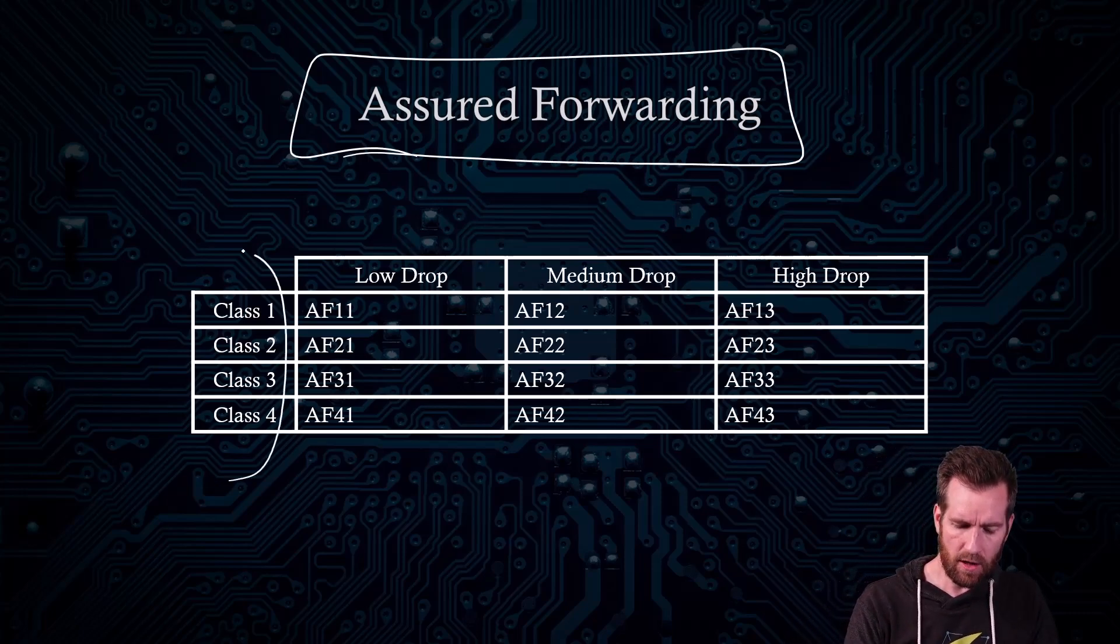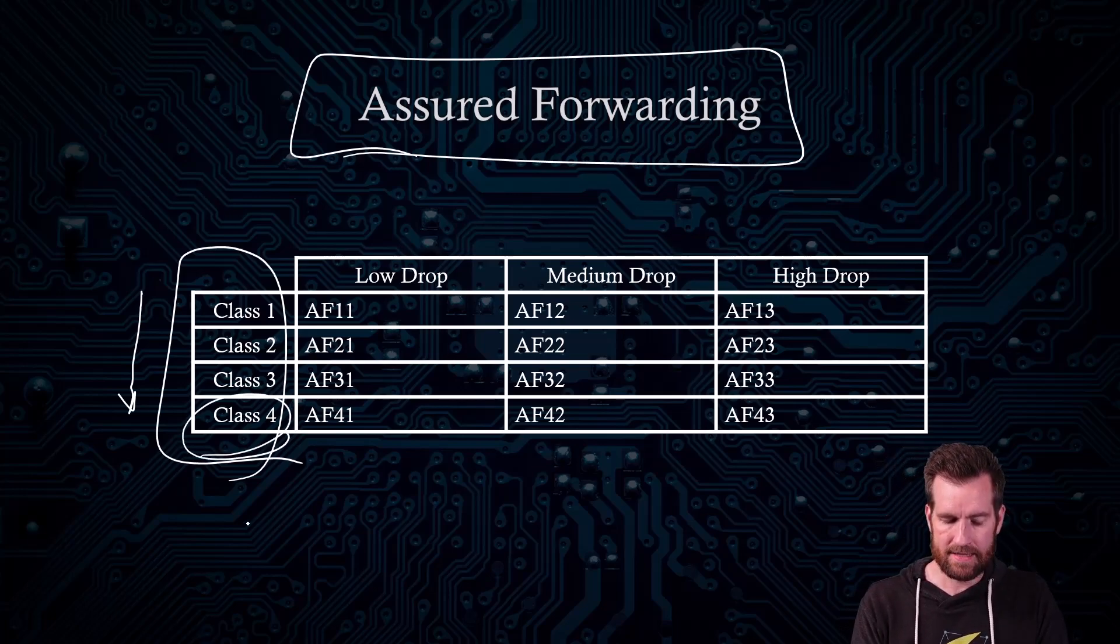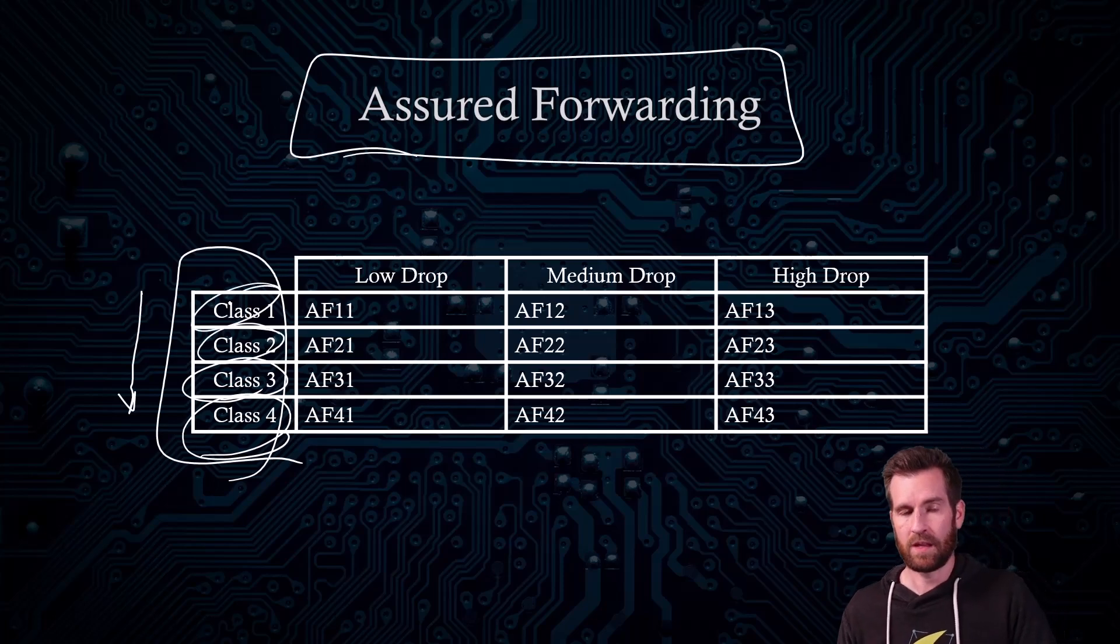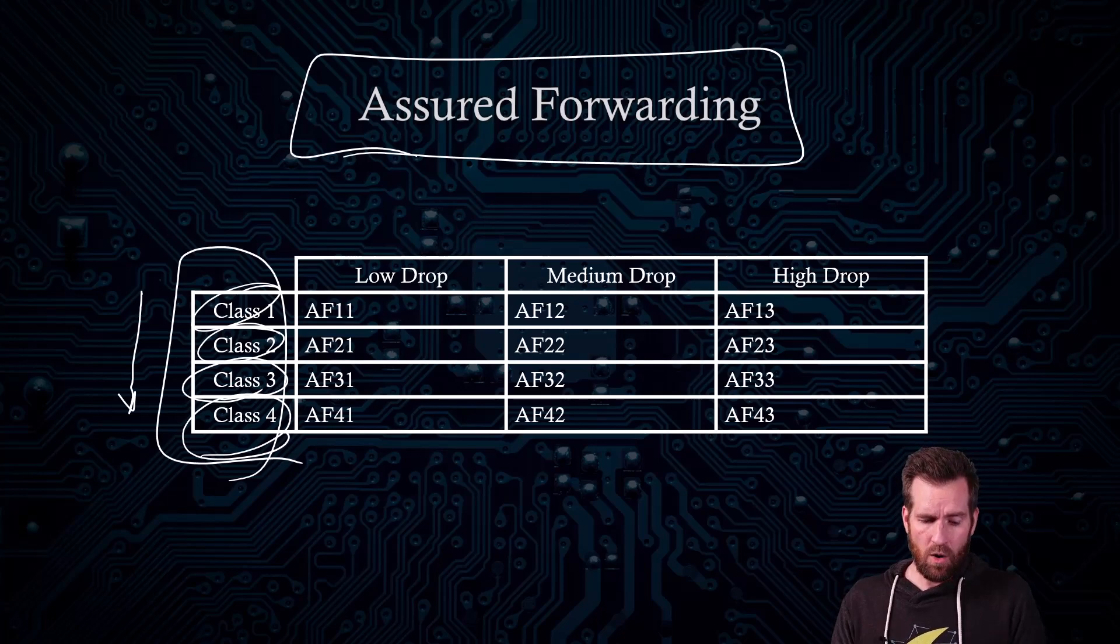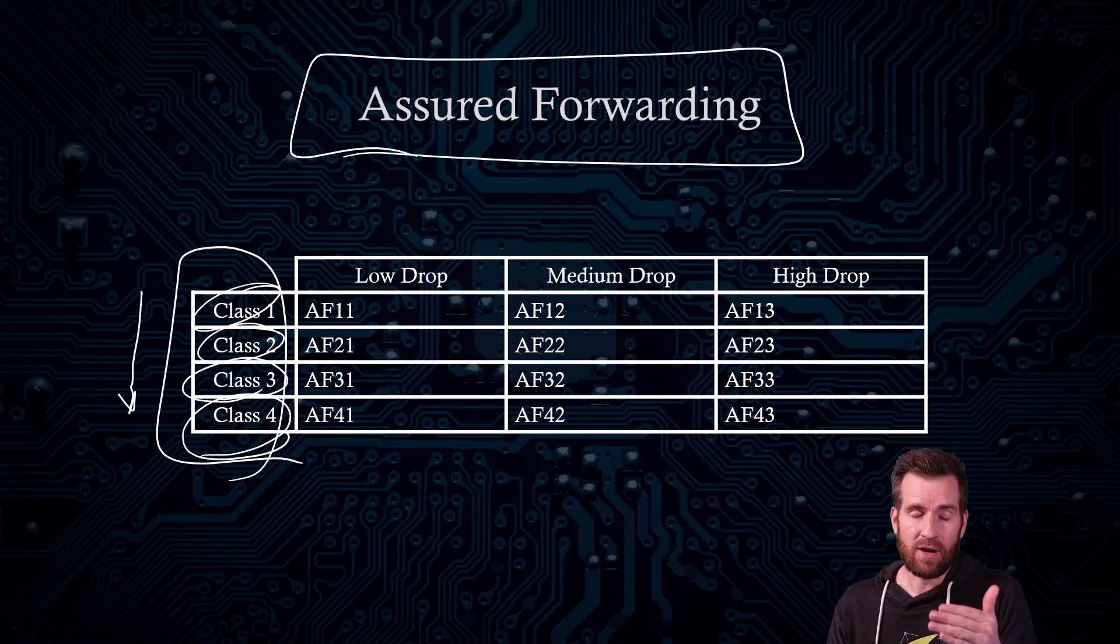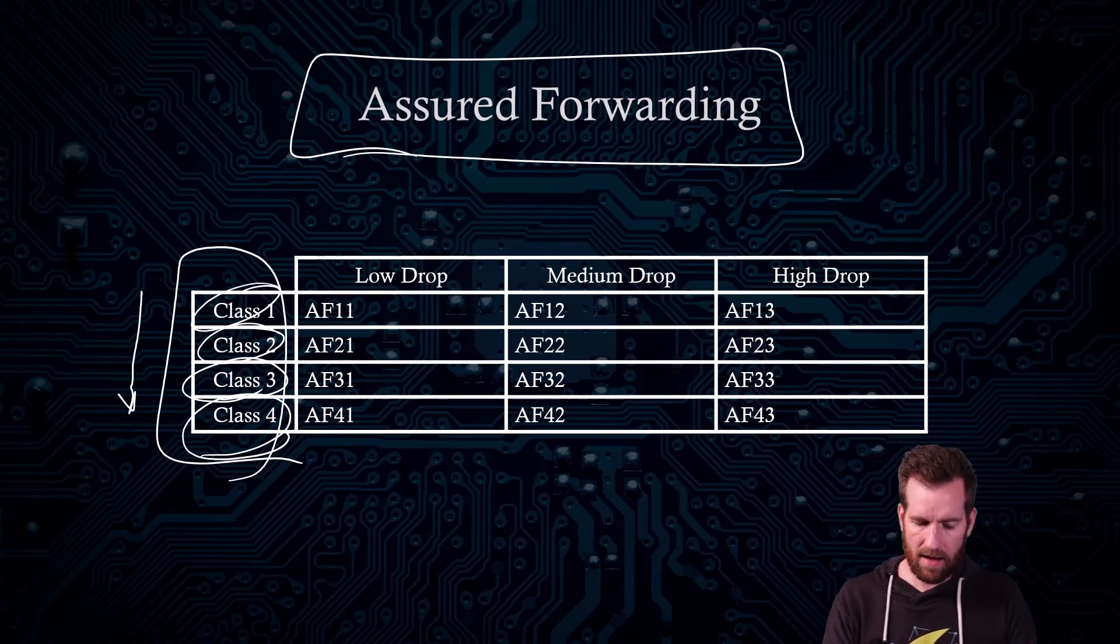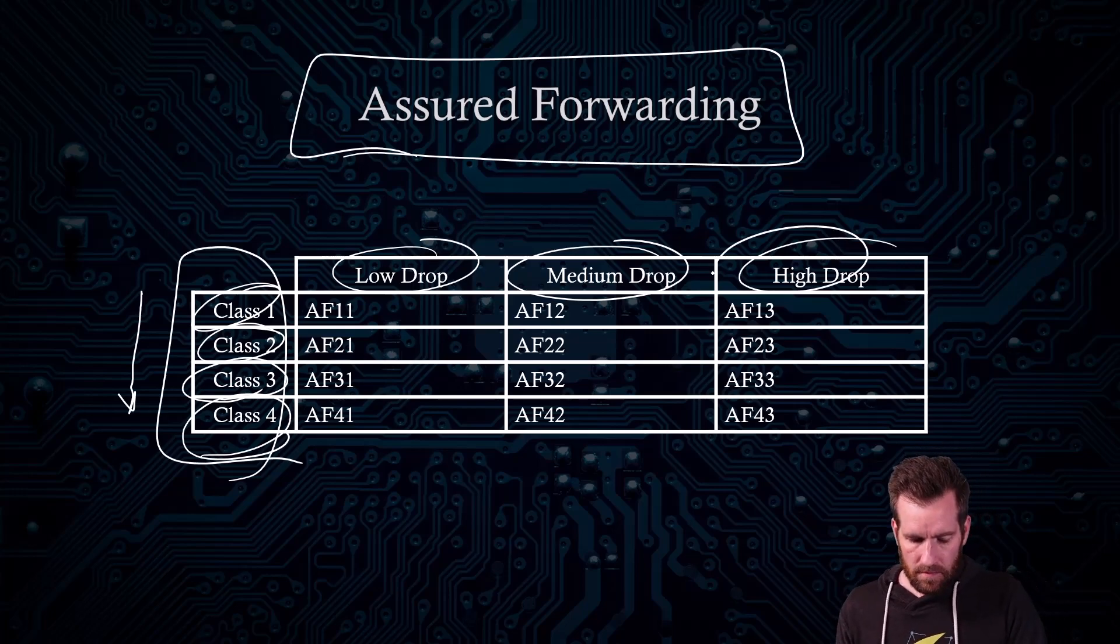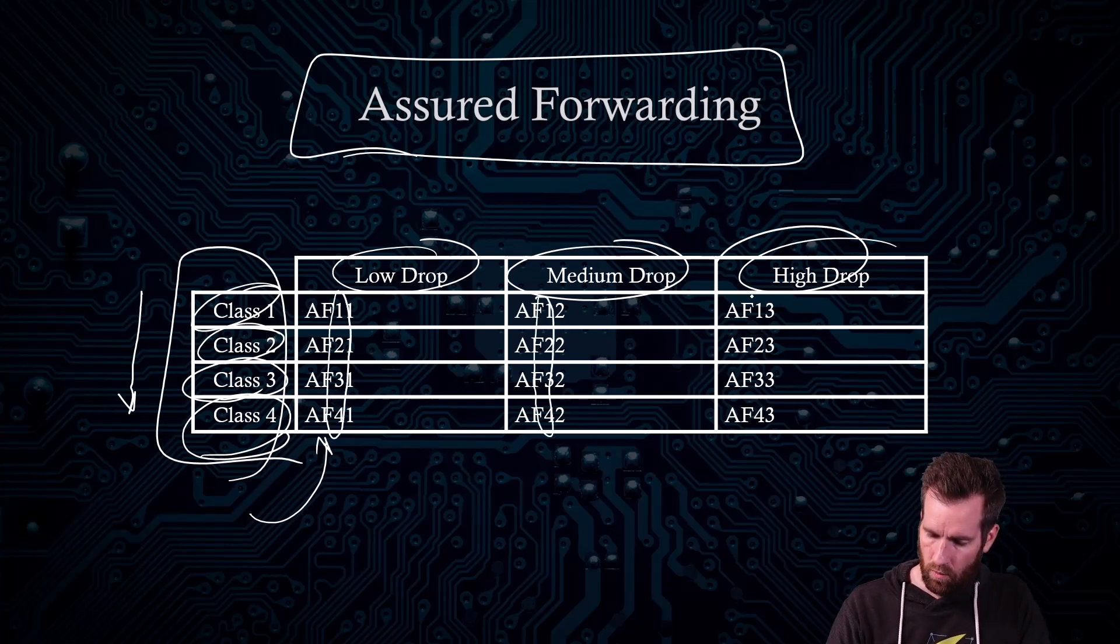So with the assured forwarding, essentially we have four classes. And once again, as we go up through the classes, the traffic becomes more important. So a class four is a higher priority than a class three and a class two and a class one. But what we also have is we recognize that if we are going to drop some of the information, we want to maybe treat some of this traffic a little more on an equal level. So we want to identify out of each one of these classes, what is the traffic we want to drop and what is the traffic from each of those classes we don't want to drop. So for that purpose, we have a low drop, a medium drop, and a high drop. And so you can see that the labeling of these all start with an AF. So that stands for assured forwarding. And then the number of class here, so one, two, three, four, one, two, three, four, one, two, three, four.